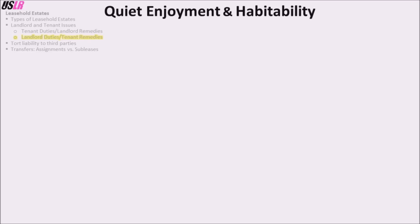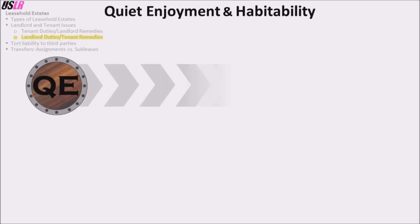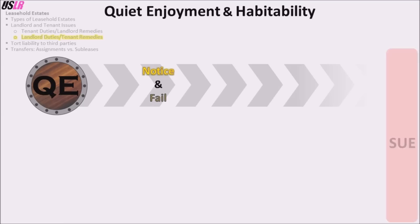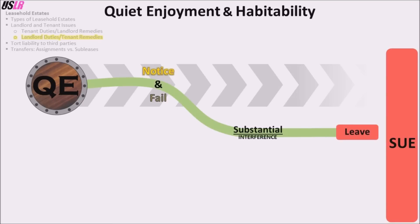When the implied covenant of quiet enjoyment is breached and the landlord has been notified and failed to correct the problem in a reasonable time, the tenant can always at least sue for damages — equal to the difference in the value of the property with and without the breach. If the interference rises to the level of substantial interference, the tenant may also leave the property without paying any more rent, a remedy based on the legal theory of constructive eviction.